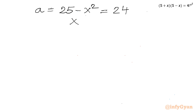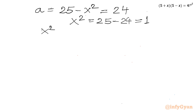From here I can write x squared equals 25 minus 24, which equals 1. So x squared equals 1. The conclusion is x equals plus or minus the square root of 1, which gives x equals plus or minus 1.